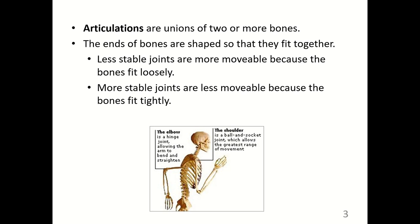The elbow is a hinge joint allowing the arm to bend and straighten. These are stable joints because the bones fit tightly together. The shoulder is a ball and socket joint which allows the greatest range of movement, which means it is a less stable joint.